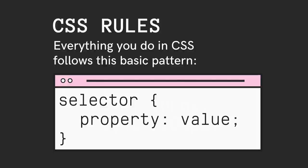Every CSS rule set that we write follows this general pattern: we have a selector, or multiple selectors, or combinators — there's a lot of terminology — but we select some elements, then curly braces, and then we set our properties. The focus of this video is really about what goes in that selector area, what goes before the curly braces.